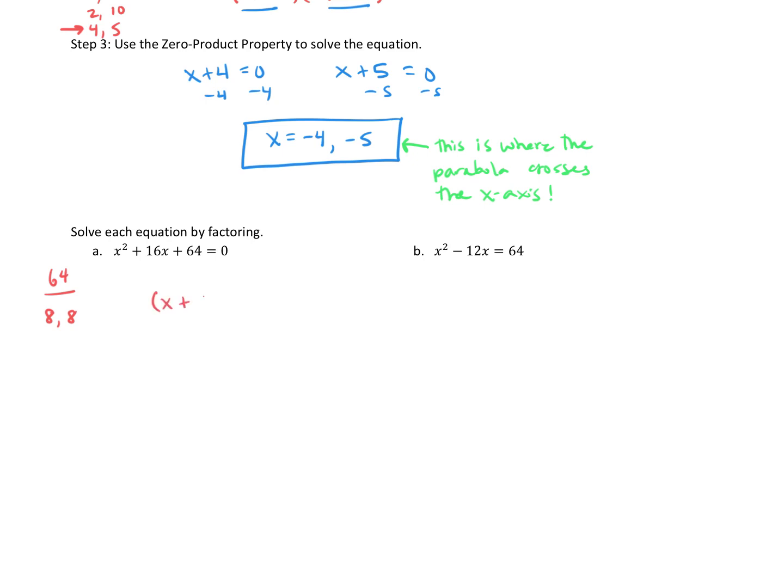So when we factor this, we have x plus 8 times x plus 8, carry down your equal 0. Now we're going to use the zero product property, set each factor equal to 0. So what's unique about this problem is our first factor was x plus 8, so I set that equal to 0. And our second factor is x plus 8. So I don't need to write a second equation, because I'm just going to get the same answer as this, because those are the same factors. So here's an example of we only have one equation, so we're only going to get one solution for x.